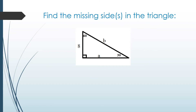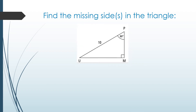Let's solve some examples. In this 30-60 triangle, the side opposite 30 is 8, so the hypotenuse is double: 16. The side opposite 60 is 8√3. Very easy.